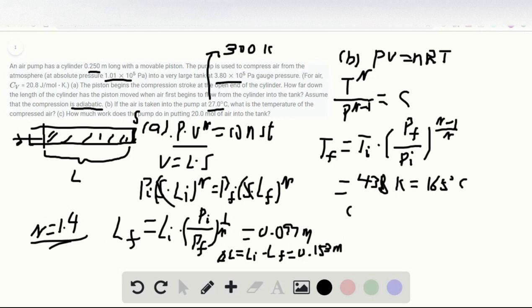And part C, we want to find out the work that added to the gas. So because this is an adiabatic process, the formula for work is simply equal to the change in internal energy, which is N times CV times delta T. And here, delta T is Tf minus Ti.